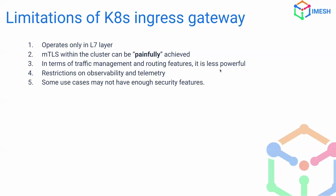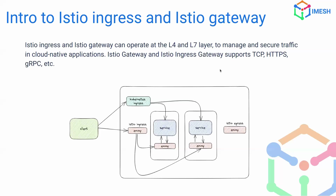Kubernetes Ingress also definitely lacks a lot of security features. This is where Istio comes into picture. The Istio Ingress Gateway operates not only at the L7 layer — unlike Kubernetes Ingress — it also operates at the L4 layer to manage traffic in your cloud native application. Istio Gateway supports TCP, HTTPS, gRPC, and custom protocols. The reason it can do this is because Istio service mesh uses Envoy Proxy as a sidecar deployment alongside services.